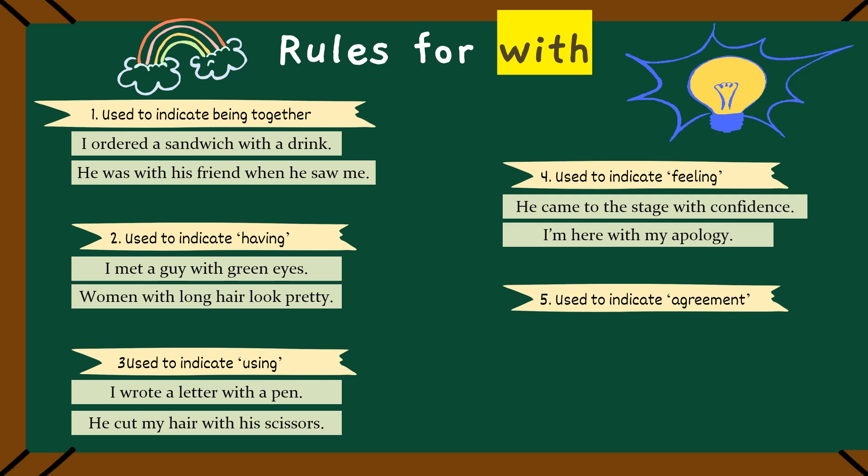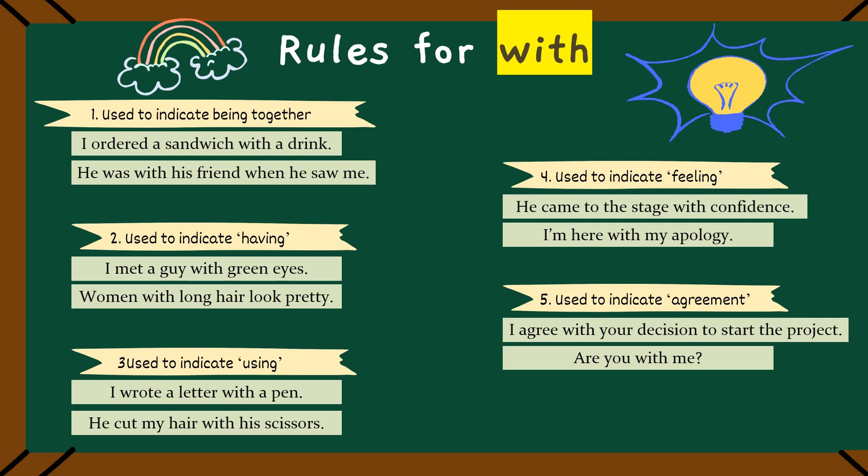And finally, we use with to show our agreement. With can show we agree with someone. If I say, I agree with your decision to start the project, that means I think it's a good idea. Or, I could ask, are you with me? This means, do you agree? Are we on the same team? Great job. That's all for with.